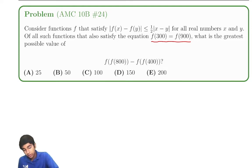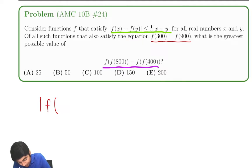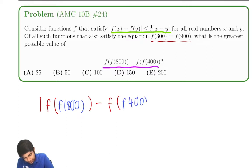We've got this condition here, so we have to try to use it somehow, right? Let's see if we can use it over here. So looks like here we have f(f(800)) minus f(f(400)). That's the expression we're trying to find.